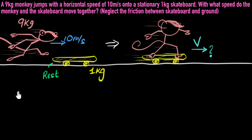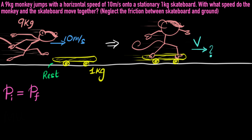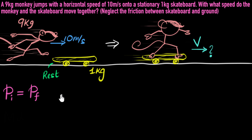All right, now we can start the problem. We'll start by saying that the total initial momentum, which we'll write as pi, should equal the total final momentum after the collision. We know how to calculate momentum — we just multiply mass and velocity. So all we have to do is calculate the initial momentum of the monkey plus that of the skateboard, equate it to the final momentum of the monkey and the skateboard, and see if we can calculate that velocity. Great idea to give it a shot yourself — pause the video and try this yourself.